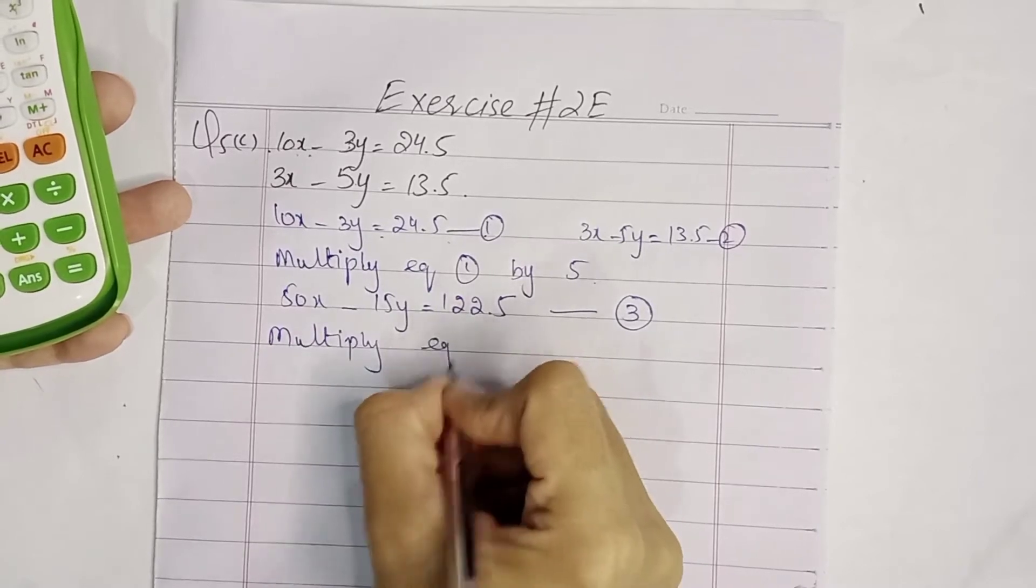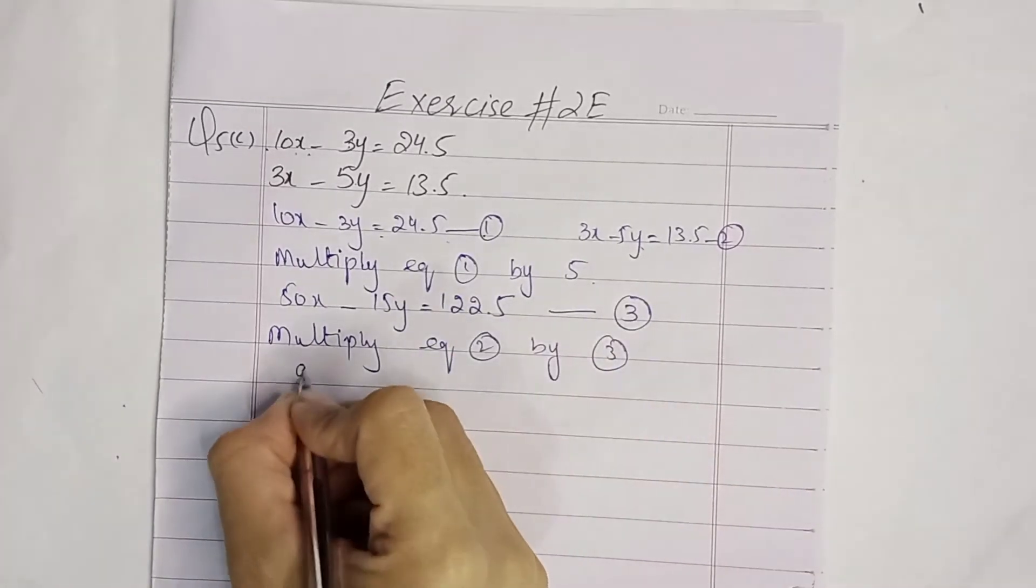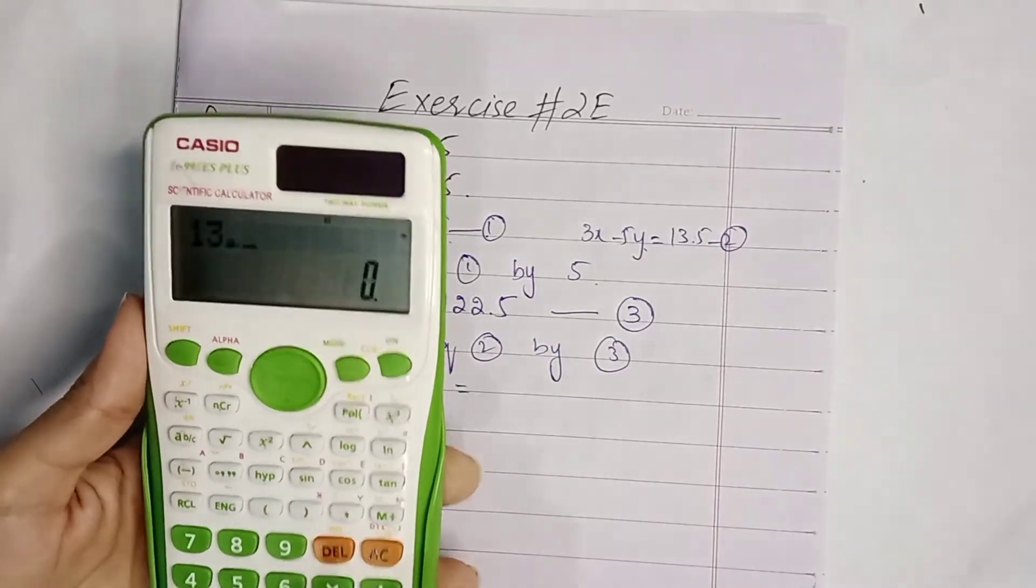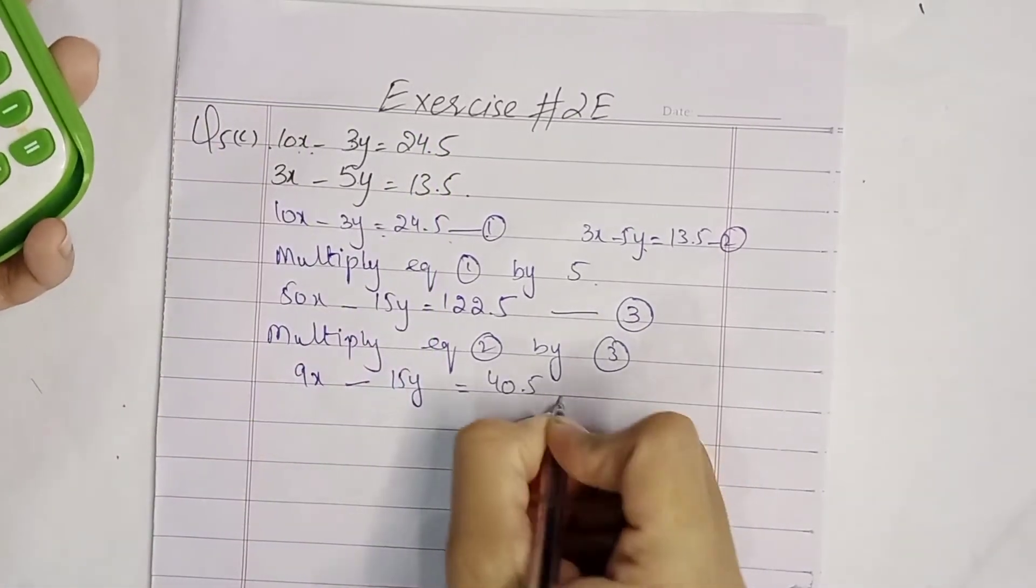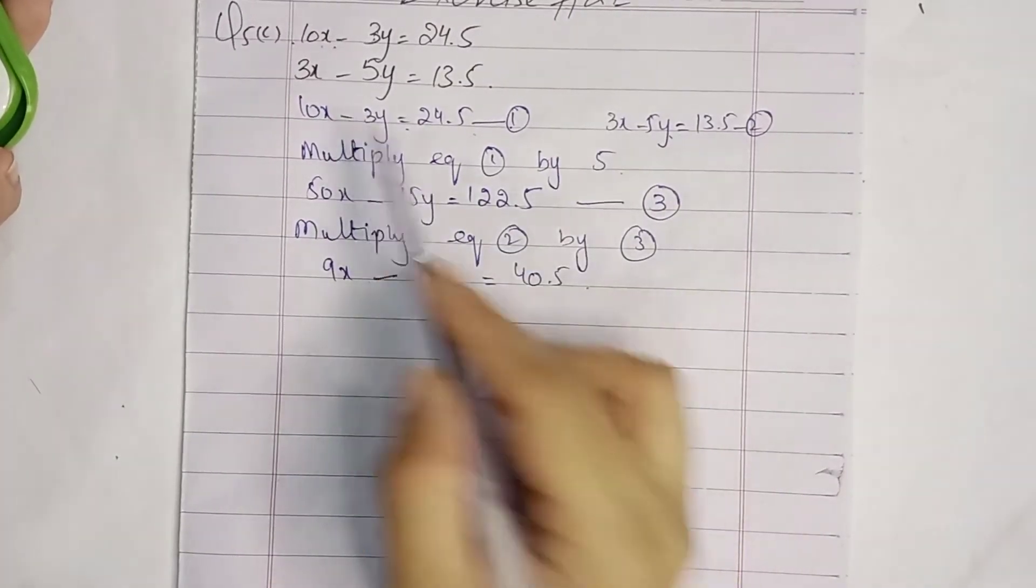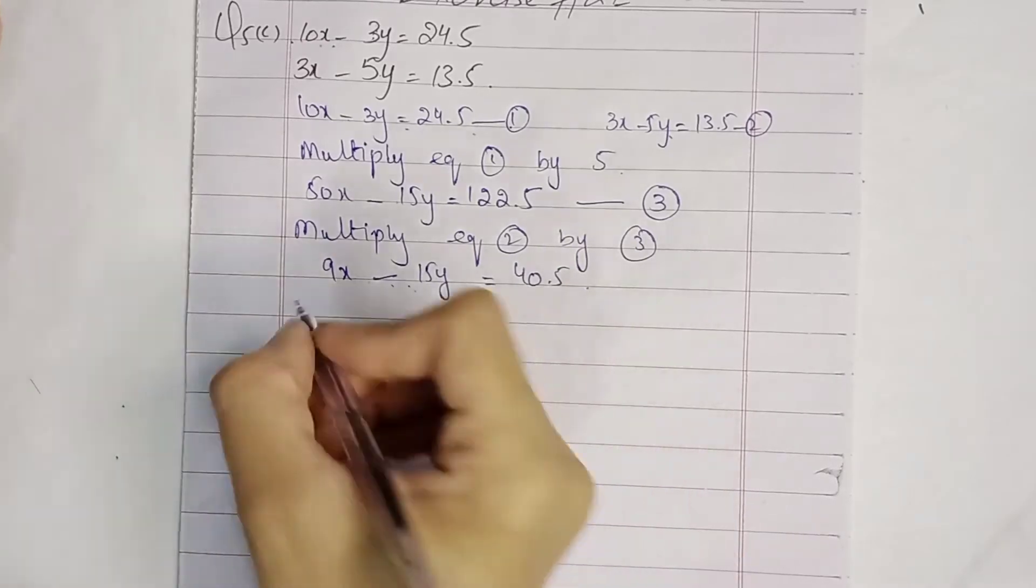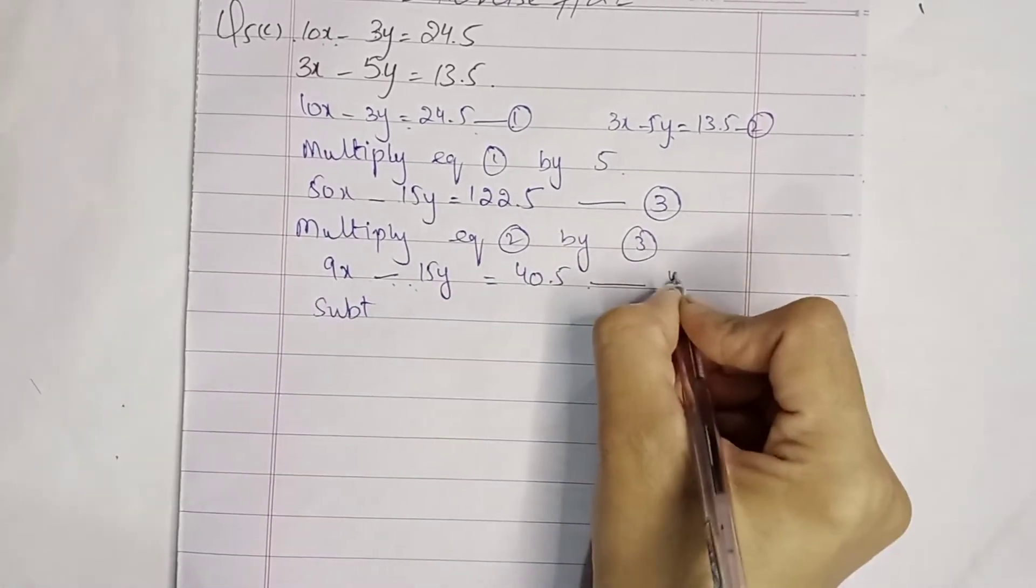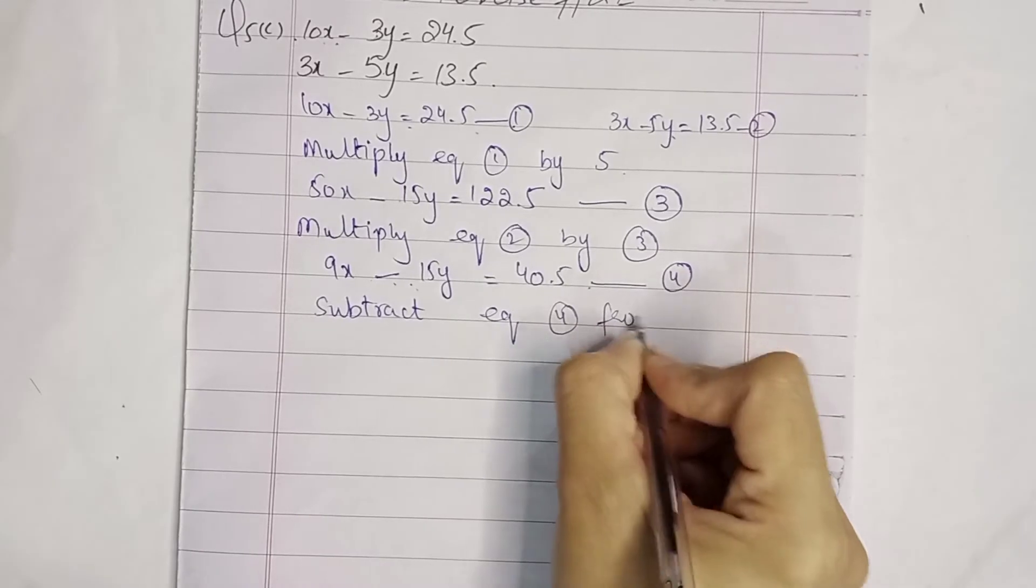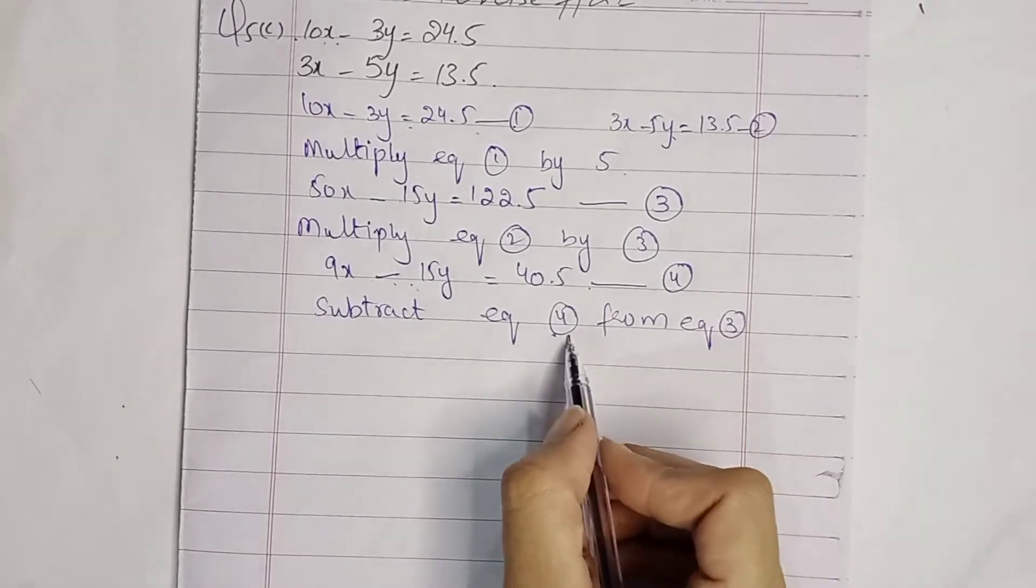We get 50x minus 15y equals 122.5. This is our equation number 3. Multiply equation 2 by 3. We get 9x minus 15y equals 40.5. This is our equation number 4. Now we subtract equation 4 from equation 3.